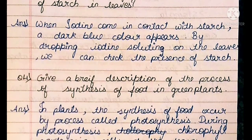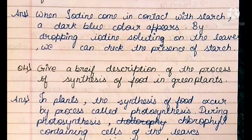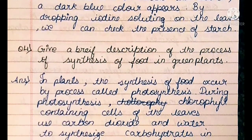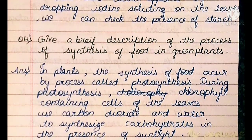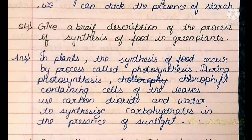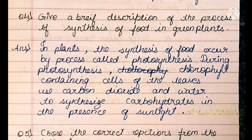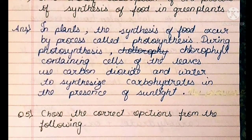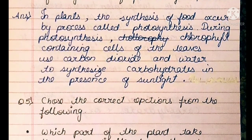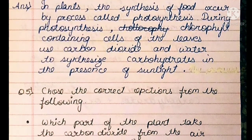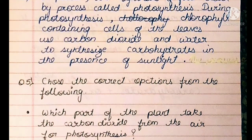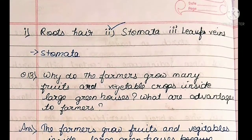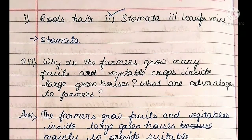Question 4: Give a brief description of the process of synthesis of food in green plants. Answer: In plants, synthesis of food occurs by the process called photosynthesis. During photosynthesis, chlorophyll-containing cells of the leaves use carbon dioxide and water to synthesize carbohydrates in the presence of sunlight. Question 5: Which part of the plant takes carbon dioxide from the air for photosynthesis? Answer: Stomata.